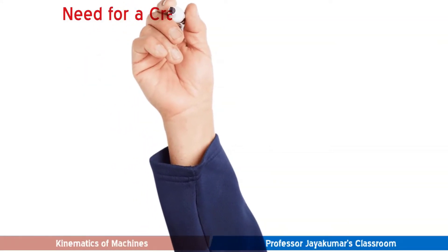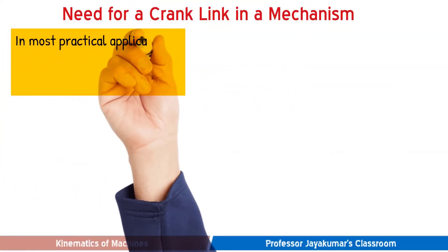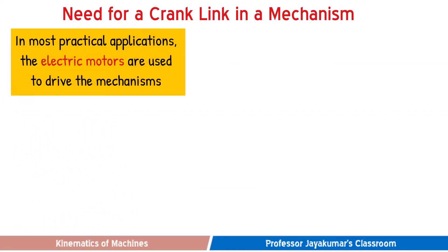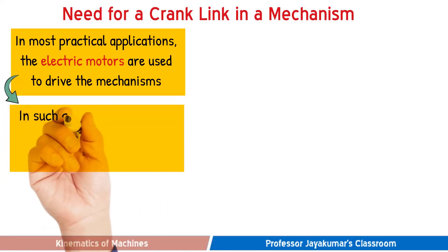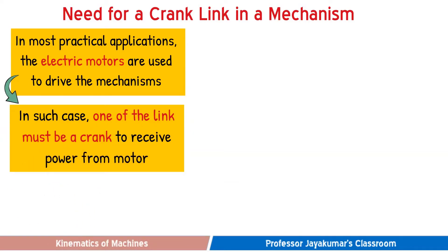It is very important to understand the need for a crank link — that means the link which can rotate in a mechanism. In most practical applications, electric motors are being used to drive the mechanisms or machines. In such cases, one of the links of the mechanism must be a crank so that it can receive the power from the motor and actuate the mechanism.